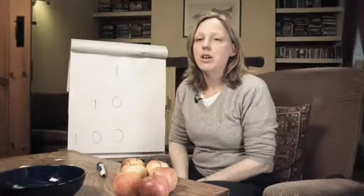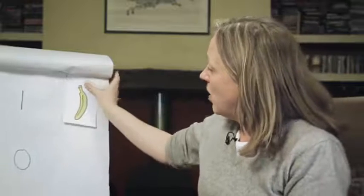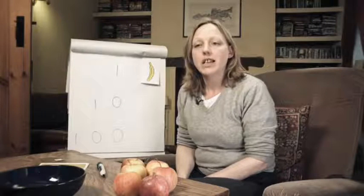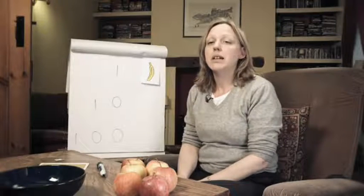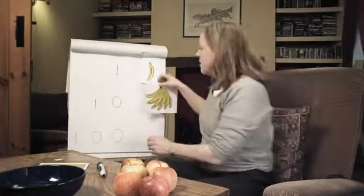It can be easier to explain this to children using everyday objects. Imagine we're talking about bananas. Here, in the number 1, the digit 1 is the first and only digit and so it represents only one single unit, or one banana. Here, in the number 10, the digit 1 has been shoved along one place to the left and so its value has changed — its value has got 10 times bigger. It now represents not one single banana but one bunch of 10 bananas.